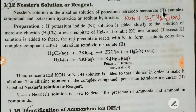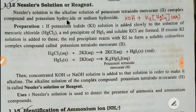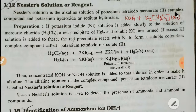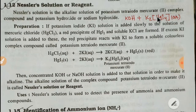In Nessler's solution, mercury has an oxidation state of 2+ in the tetraiodo mercurate complex compound, and the solution also contains potassium hydroxide or sodium hydroxide to make it alkaline.